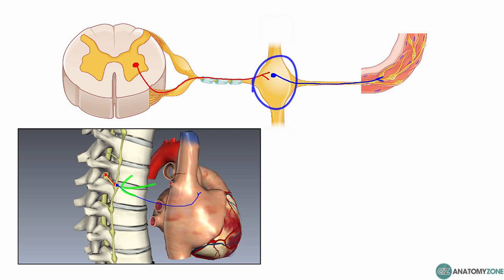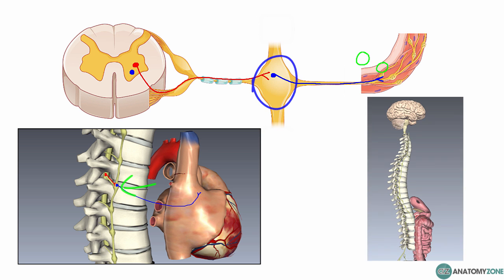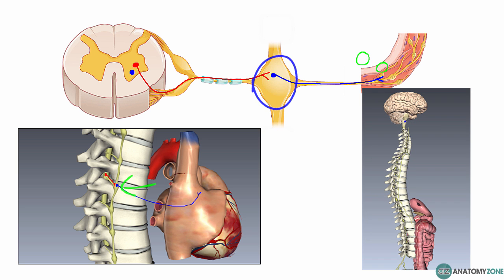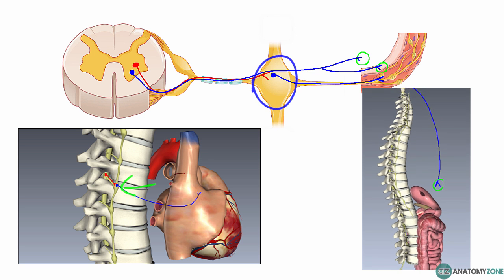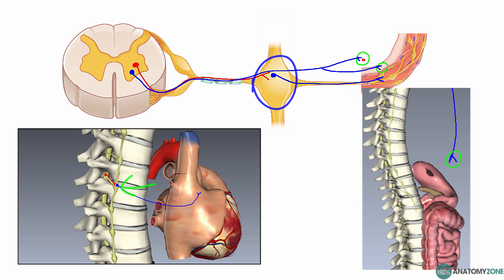In the case of the parasympathetic nervous system, the ganglia are often located either near to or actually within the target organ. So the pre-ganglionic neuron has a longer distance to travel in order to form its synapse with the post-ganglionic neuron, and then the post-ganglionic neuron will be relatively shorter.